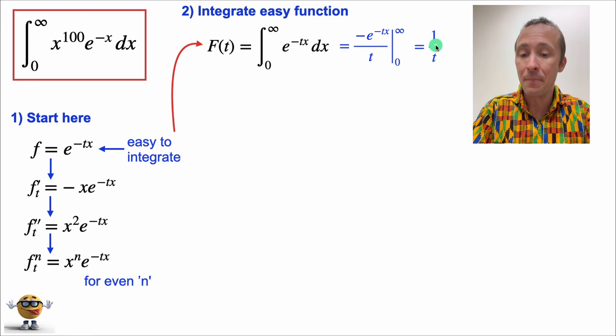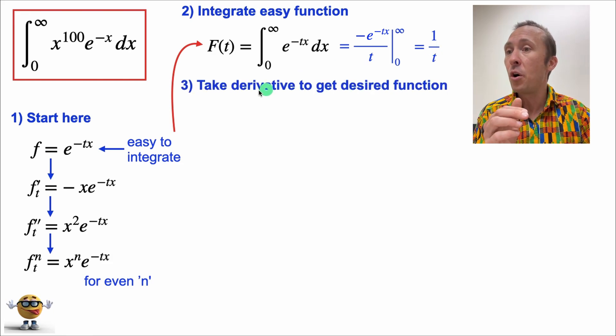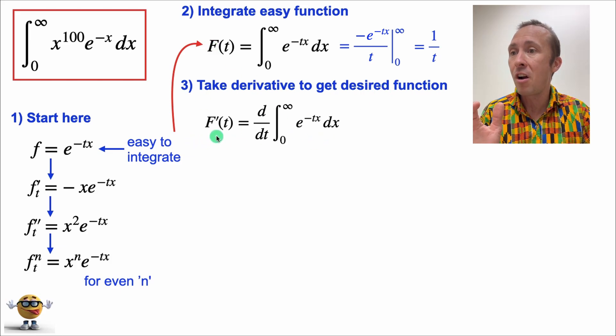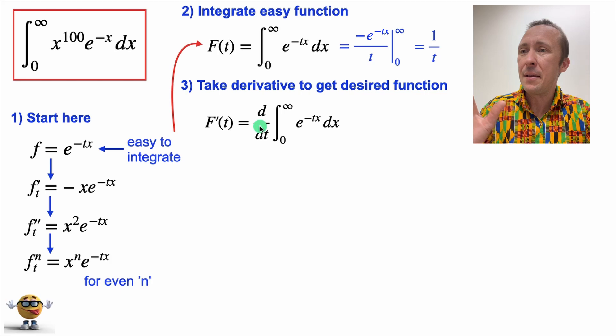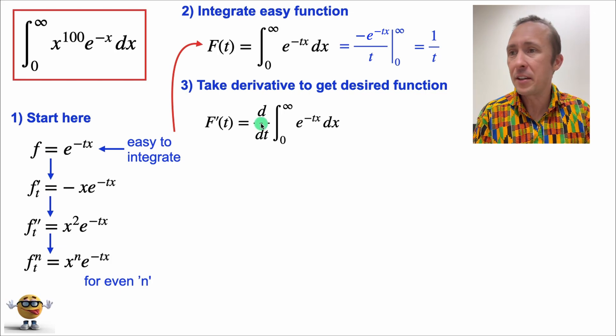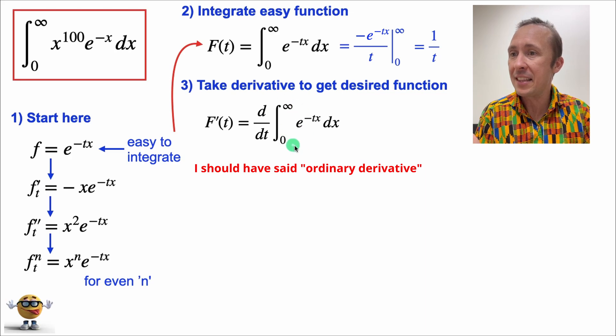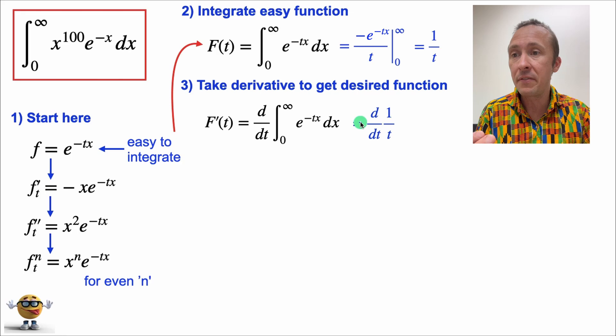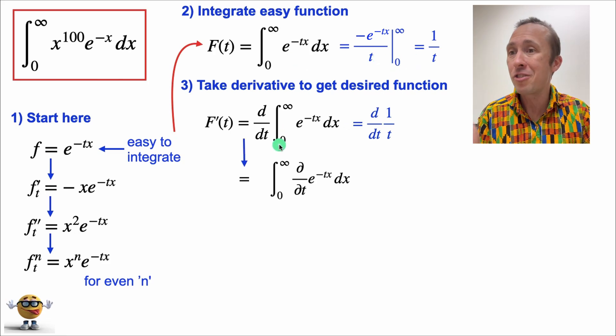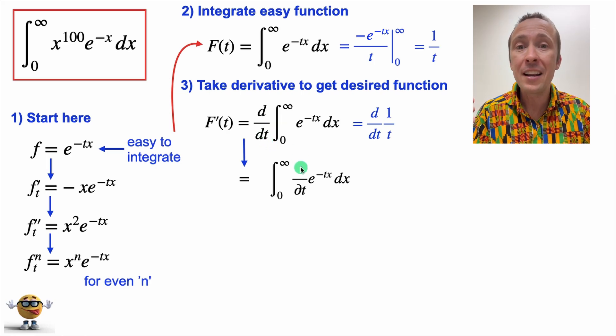Now, this is the trick part. We're going to take the derivative a bunch of times to get our desired function. So the derivative f prime is the derivative with respect to t, and this is a single variable derivative, because after we take the integral, the x is gone, so it's just a function of t only. So we're taking the derivative of our integral, and that's the same as taking the derivative with respect to t of 1 over t, because 1 over t is what our integral evaluates into.